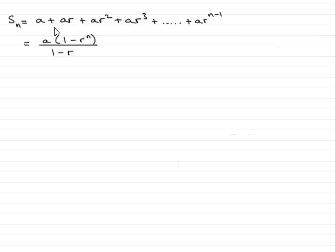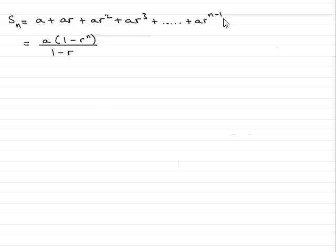If we take a geometric series, the first term is A and we multiply the first term by a constant ratio called R. Then the second term would be AR, the third term would be AR squared, the fourth term AR cubed, and so on. The nth term would be AR to the power n minus 1. If we add these terms up, we often call this the sum of the first n terms, Sn.